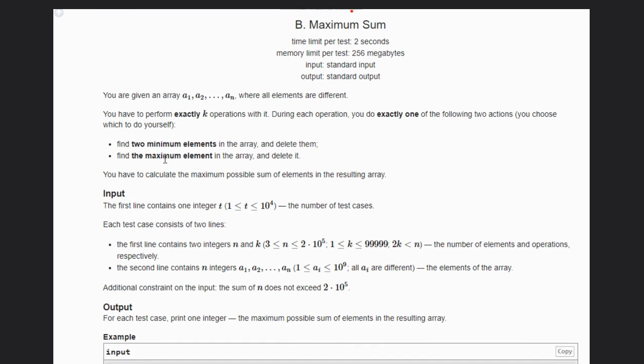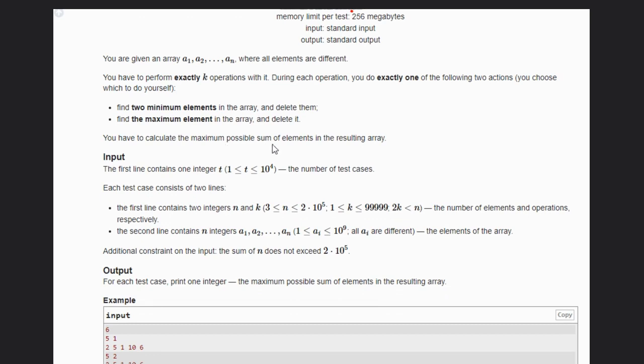The difference is that when we choose the maximum element we have to delete only one element, and when minimum we have to delete two elements. We have to calculate the maximum possible sum of the elements in the resulting array.